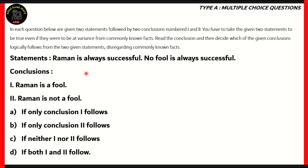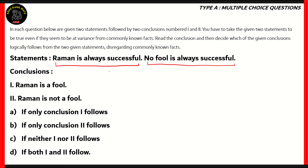Here are the statements: Raman is always successful. No fool is always successful. The conclusions given are: one, Raman is a fool; two, Raman is not a fool. This question is relatively simple because one of the statements says that no fool is always successful, and the other statement is that Raman is always successful. Since both of these are universal statements, the universal negative — Raman is not a fool — has to be the correct statement.